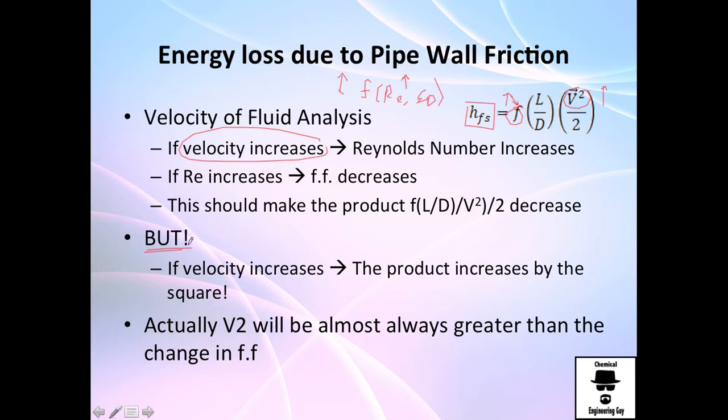But there's a very interesting concept. If the velocity increases, this is to the square, guys. So actually if you ask me, I think this is way more because this will maybe increase this from 0.2 to maybe 0.022. Whereas, for example, if I had 1 meter per second and I change it to 3 meter per second, I will have 9.